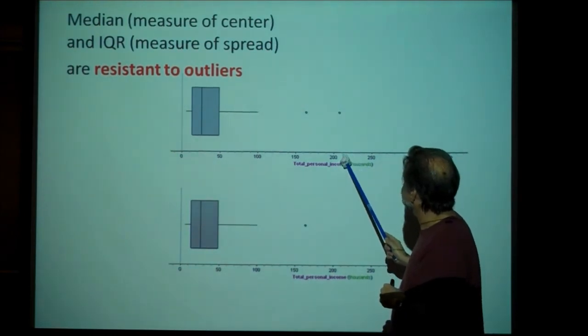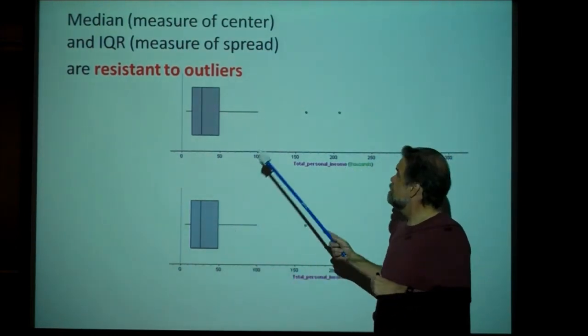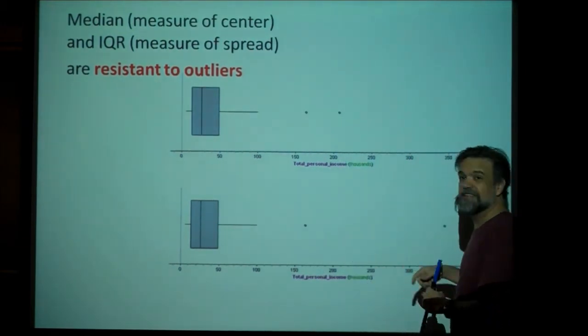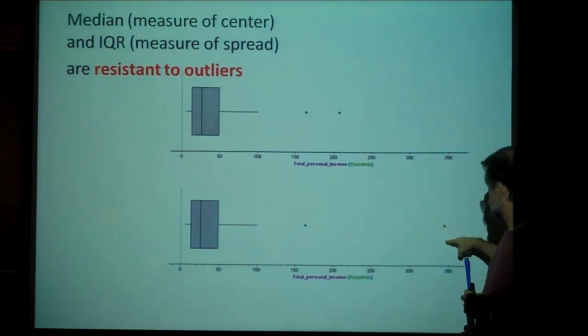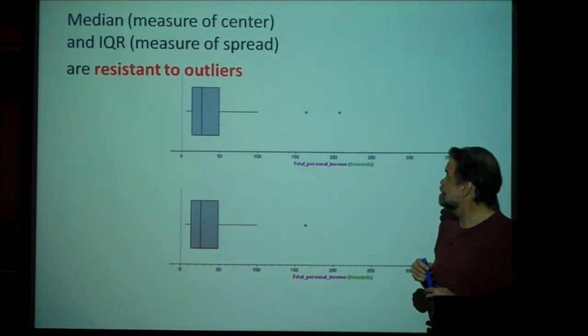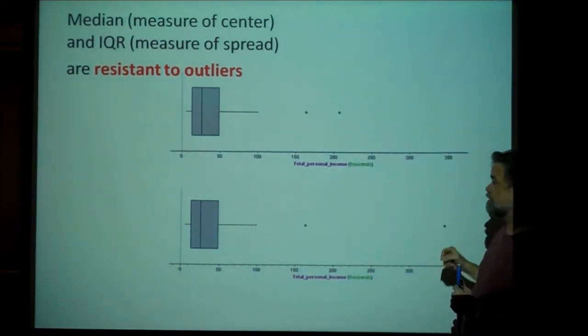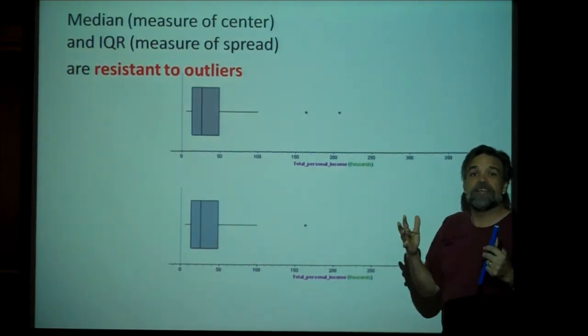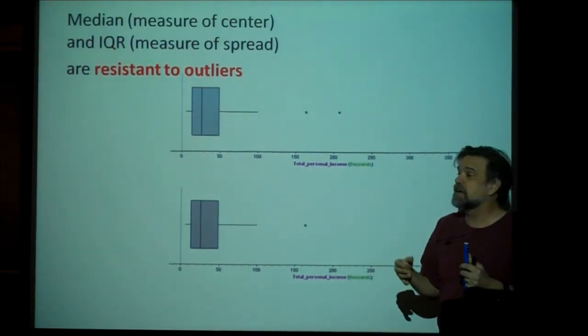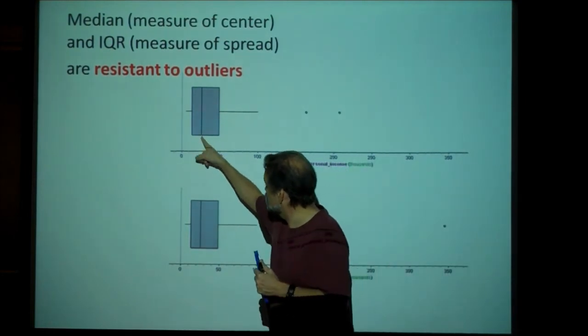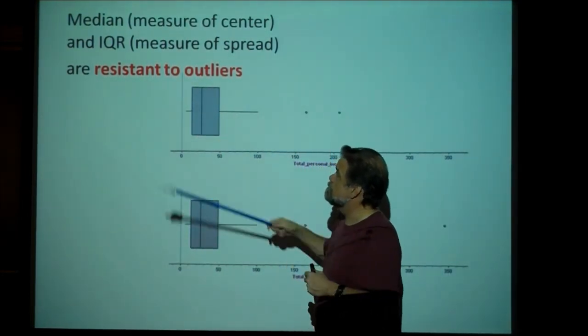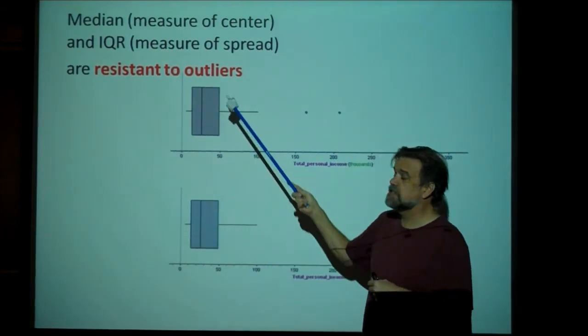This one's making, looks like about $165,000 a year. This one's making about $210,000 a year. But then I realized, oh man, I misjudged this one. He's actually making $350,000 a year. So, I pulled this dot way out here, and so now I'm thinking, oh no, what has that done to my median? What has that done to my IQR? The answer is, nothing.